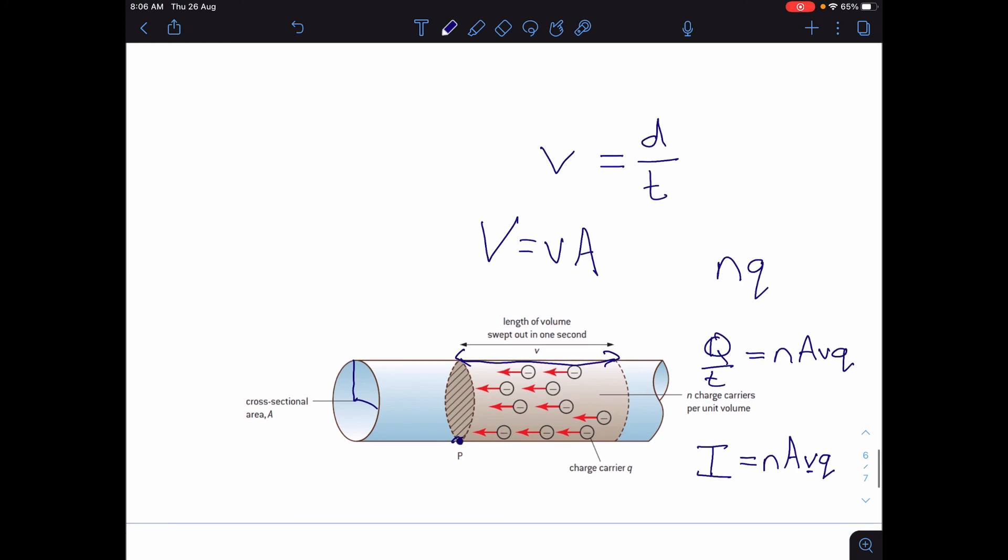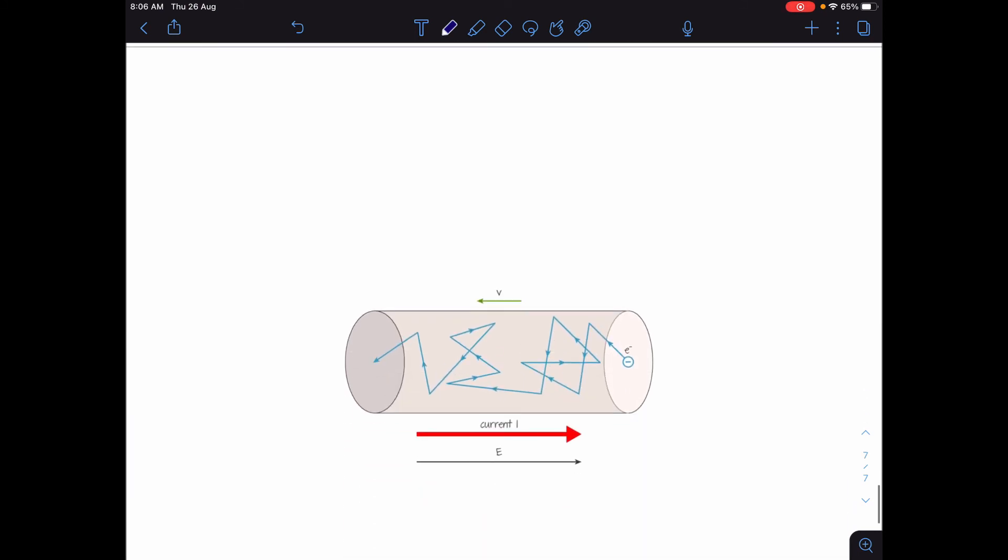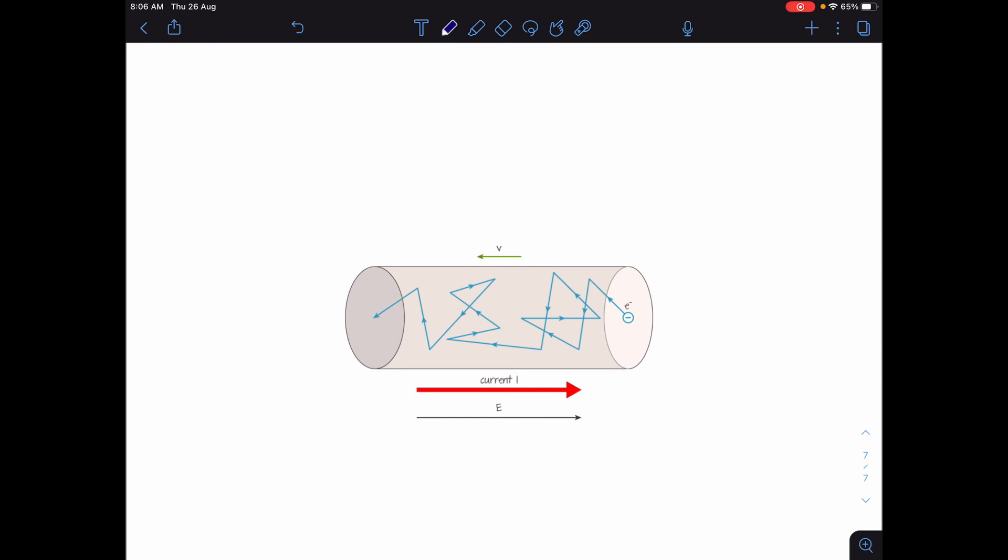Now, the electrons don't actually travel in a perfectly straight line, like is shown by these arrows. What they actually do is something more like this. It's a kind of crazy path, but the average velocity is still given by V from the equation above.